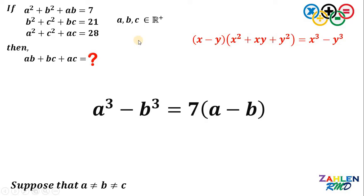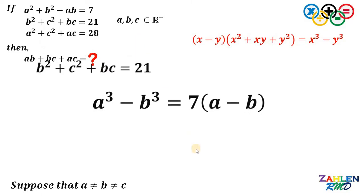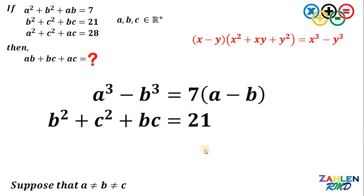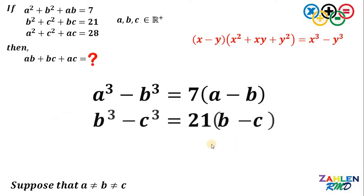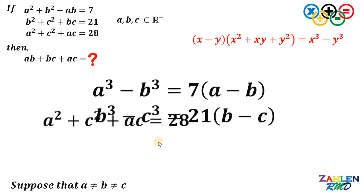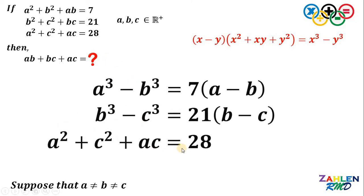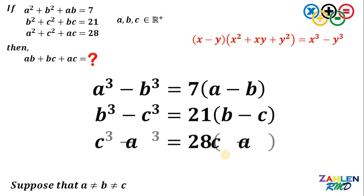We will do the same thing on the second equation: multiply both sides by b minus c, because we know for sure that b minus c is not equal to 0. The left-hand side becomes b cubed minus c cubed. Again, we do the same on the third equation: multiply both sides by c minus a. So we have 28 multiplied by c minus a, and on the left side we have c cubed minus a cubed.